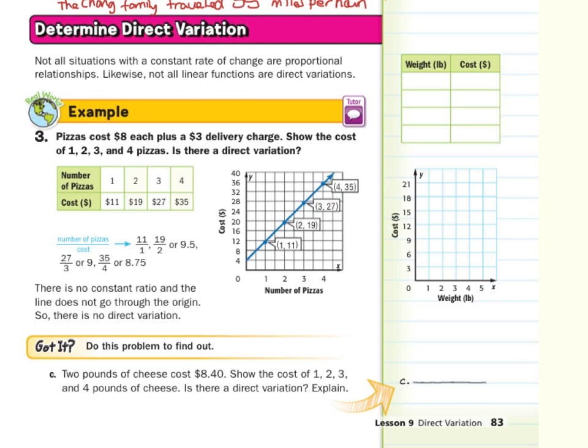And when you start to think of direct variation now, I want us to start thinking of this as y over x. When you think direct variation, y over x. That equals the k, but we don't have the k right now, so we need to see if it exists. Our number of pizzas on the graph is our x. Our cost is our y, which is why they compared this as 11 over 1, 19 over 2, 27 over 3, and 35 over 4. 11 over 1 is simplified, 19 over 2 simplifies to 9 and a half, 27 over 3 simplifies to 9, and 35 over 4 simplifies to 8.75. That's not a constant ratio for any of them, and the graph does not go through the origin, so there is not a direct variation. So we need it to go through the origin, and we need a constant ratio for there to be direct variation.